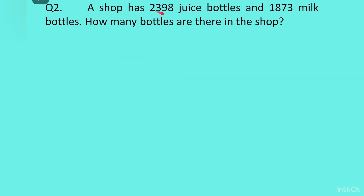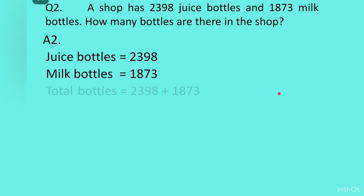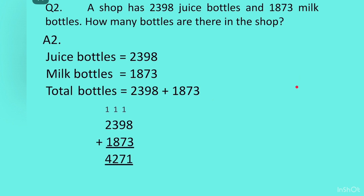Next, a shop has 2398 juice bottles and 1873 milk bottles. How many bottles are there in the shop? We will write: juice bottles is equal to 2398, milk bottles is equal to 1873. Then, referring to the question, total bottles is equal to 2398 plus 1873. Writing them one below the other and adding gives the answer 4271. Answer: 4271 bottles.